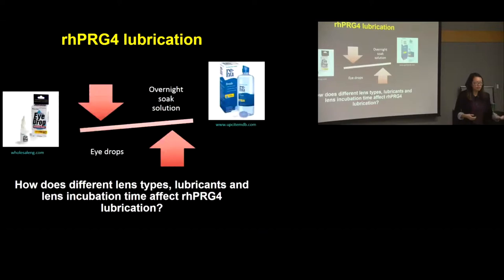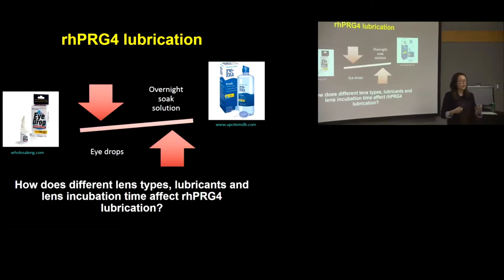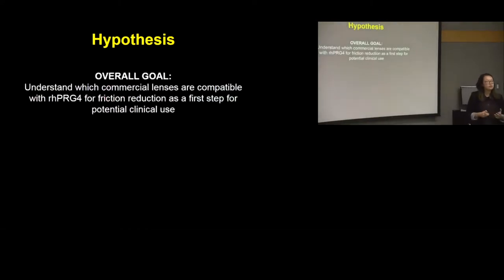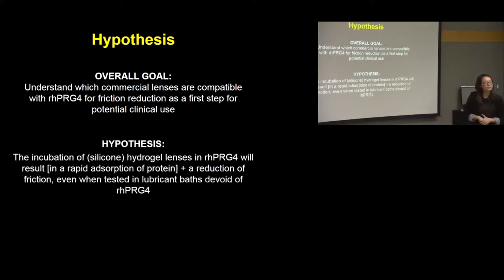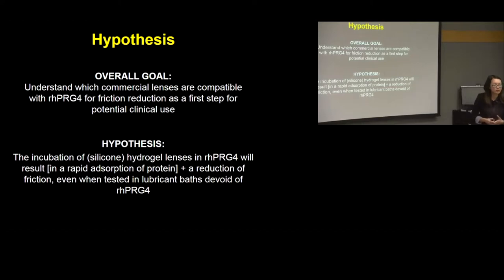Those remaining options are the overnight soaking solution, where we incubate lenses in RH-PRG4, and the eye drops, where we incubate instantly right before testing. This brings me to the main question of my thesis: how do different lens types, different lubricants, and different lens incubation times affect RH-PRG4 lubrication? My hypothesis is that incubation of lenses in RH-PRG4 will result in rapid adsorption of protein and a reduction of friction, even when tested in lubricant baths devoid of RH-PRG4.